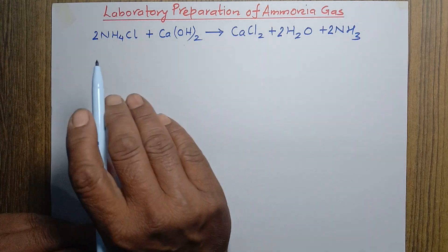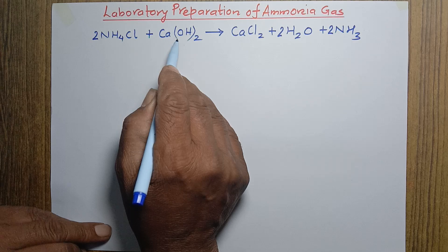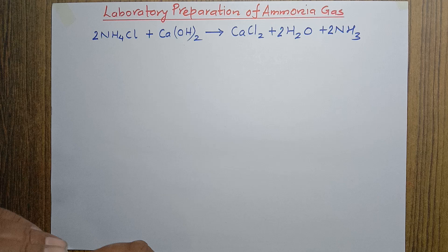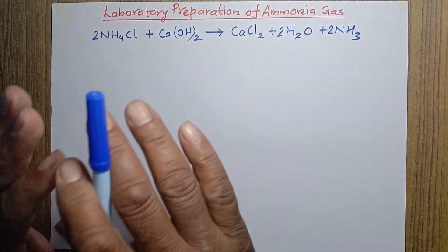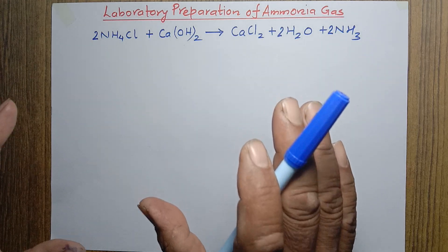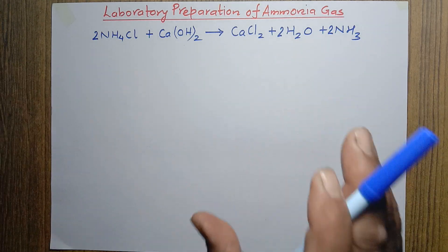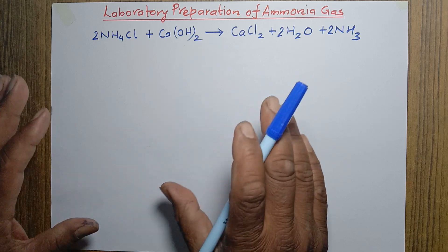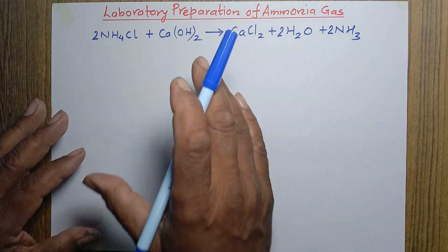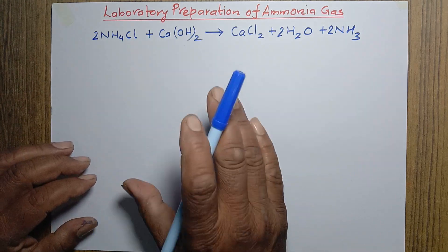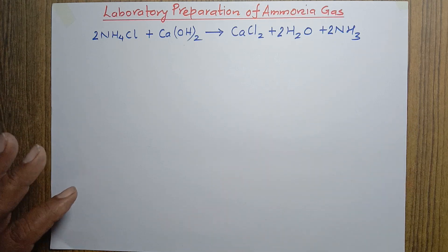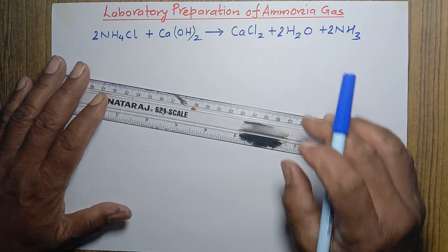This chemical reaction represents the preparation of ammonia gas in the laboratory. Now I want to go through the diagram showing how to draw the figure for laboratory preparation of ammonia gas. In an examination you may be asked to draw a neat and labeled diagram to show the laboratory preparation of ammonia gas.